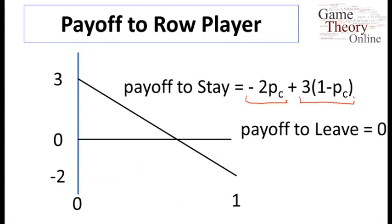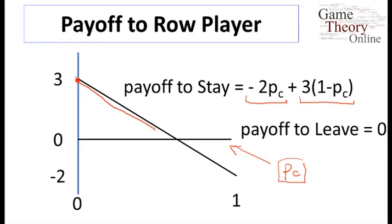We can graph the payoff to stay. On this axis is the probability that the column player stays. If that's zero, the payoff to stay is going to be three. As the column player stays with higher and higher probability, the payoff to staying for the row player goes down. So we end up with a downward sloping line representing the payoff to stay, and the payoff to leave is always zero.